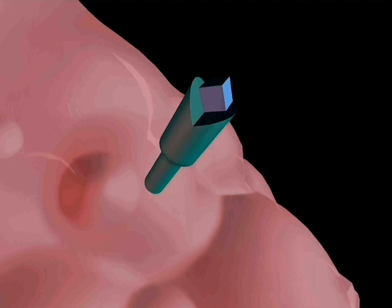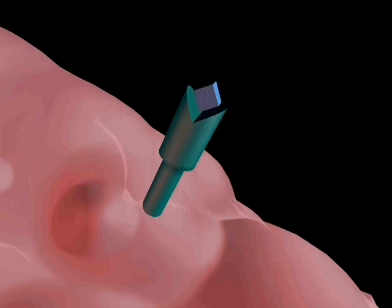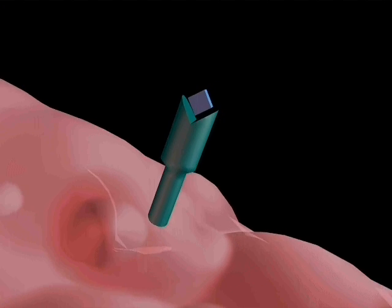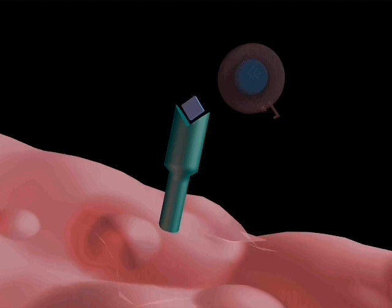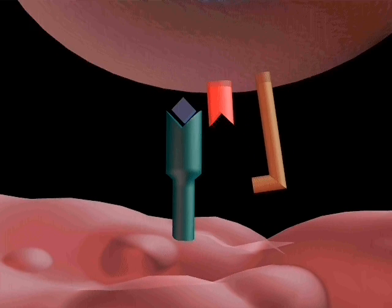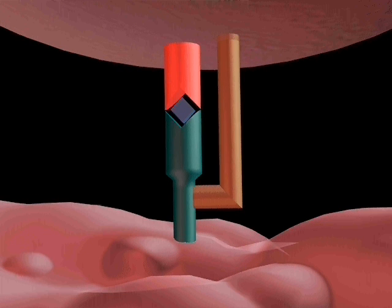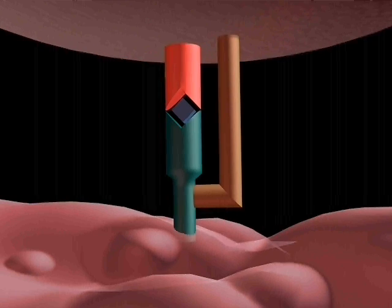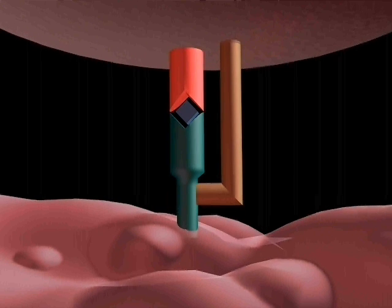The antigen is presented to any Th1 cells that may be encountered. A Th1 cell that recognizes the particular antigen will bind to the surface group of the macrophage using its T cell receptor plus a CD4 molecule, which recognizes the MHC class II part of the presented antigen fragment.